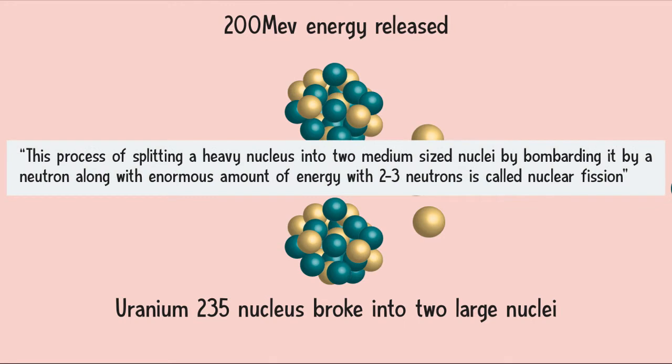This process of splitting a heavy nucleus into two medium-sized nuclei by bombarding it with neutrons, along with enormous amounts of energy and 2-3 neutrons, is called nuclear fission.